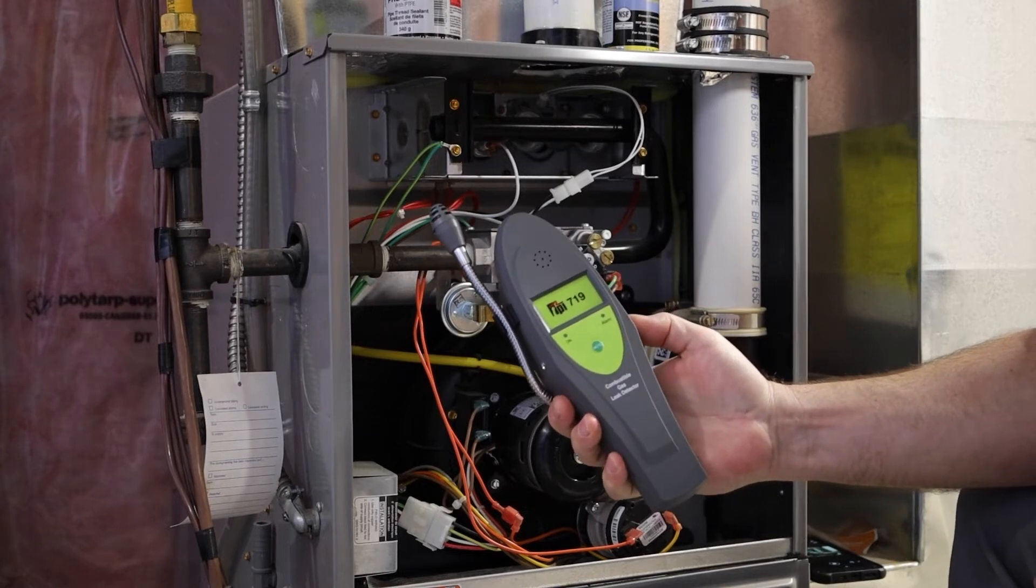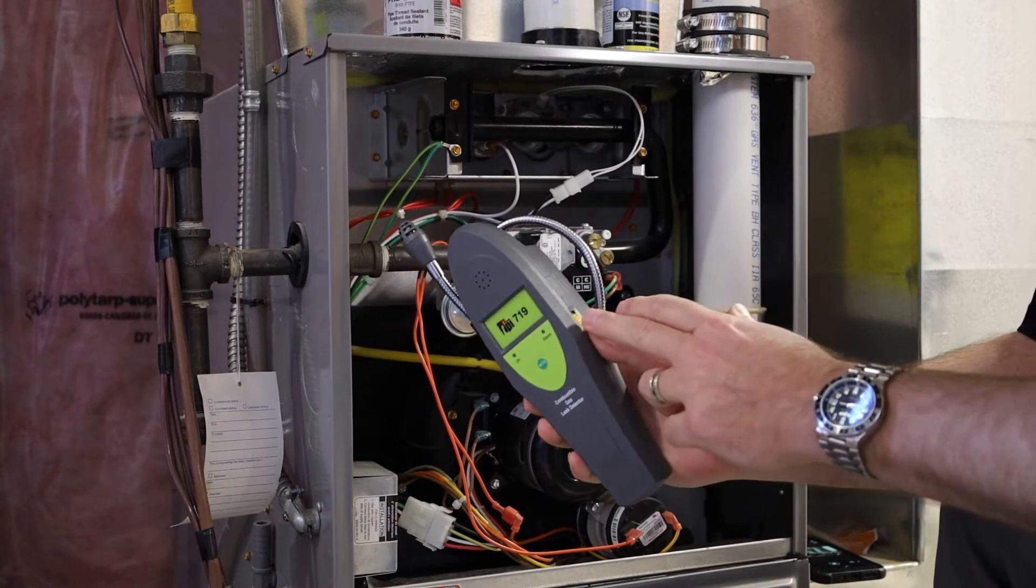The next one I have here is the 719. Now it's a little different. It's got a thumb wheel on the side.